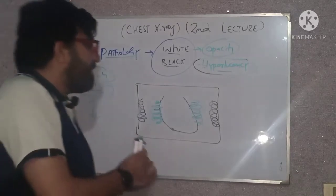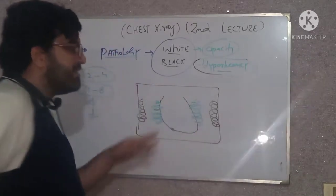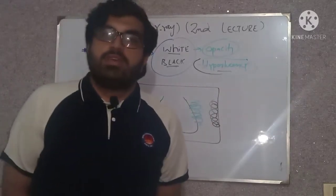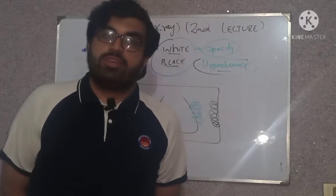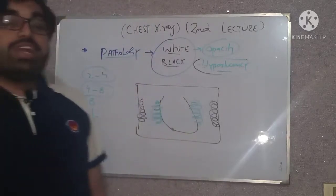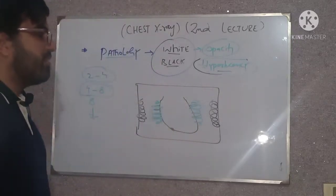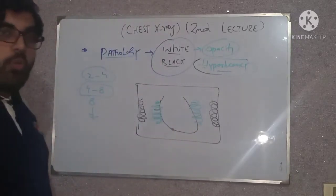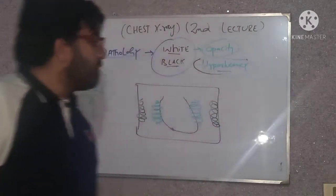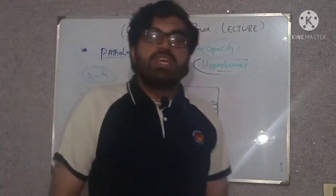If a patient has opacity peripherally — pleural-based, sparing the central zone — and has high-grade or low-grade fever without another focus, with cough and not maintaining oxygen saturation, the diagnosis is COVID pneumonia. If you know the location of the lesion, it will tell you the diagnosis.